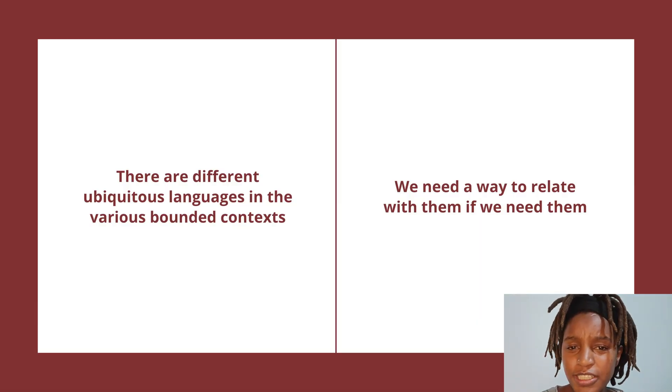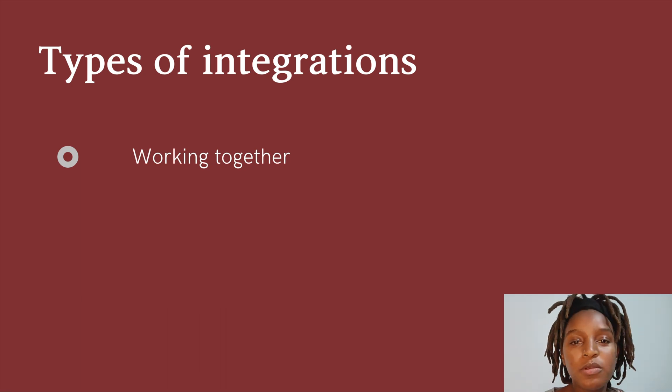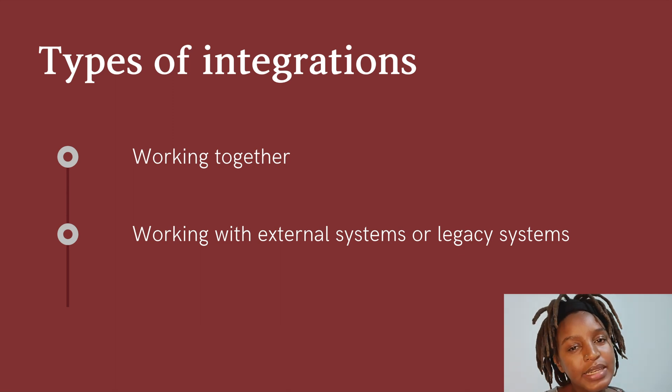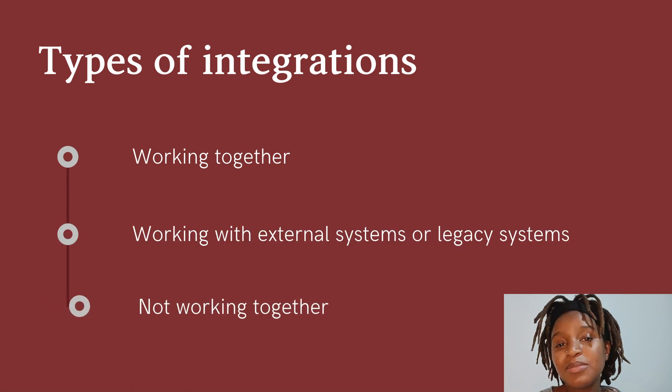What are some ways we can do these integrations effectively? In domain-driven design, when doing context mapping, we can work together — we'll see different examples with different degrees of collaboration. We also have scenarios where you're technically working together but with an external or legacy system — one you don't have much control over or don't have time to modify — so you end up creating a layer to ensure you only get what you need.